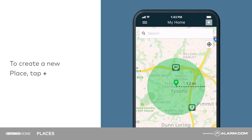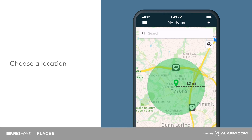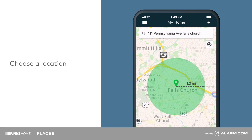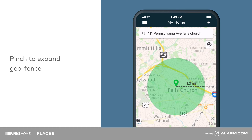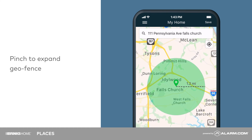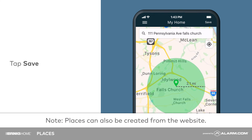To create a new place, tap the Add icon. Enter an address or drag the geofence to a specific location. To increase the size of the geofence, use two fingers to pinch and zoom out. When you are finished, tap Save.